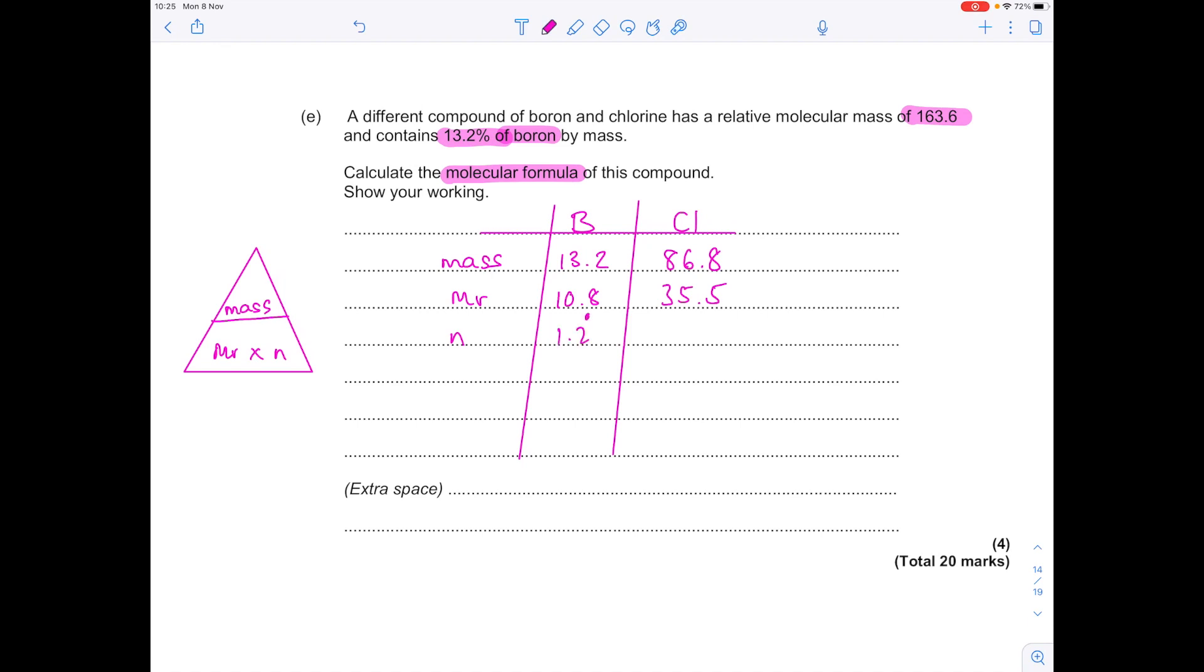So, that's 1.2 recurring. 86.8 divided by 35.5 is 2.44. Then divide by the smallest number, which is 1.2, to get a ratio of 1 to 2. So, our empirical formula is BCl₂.